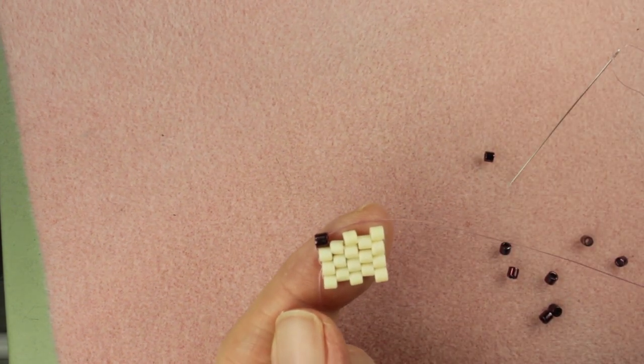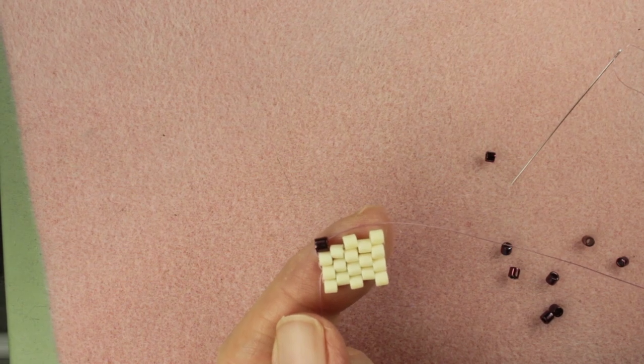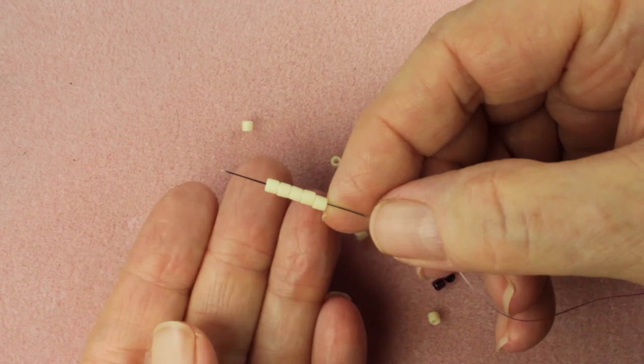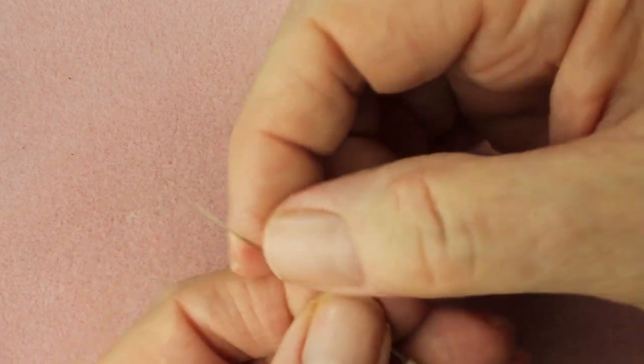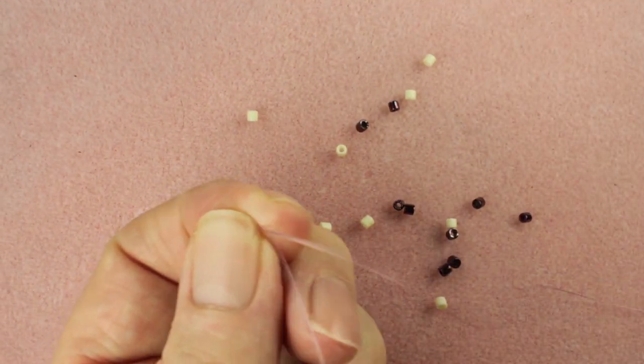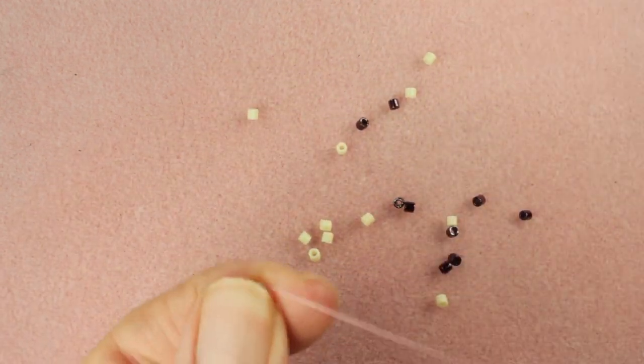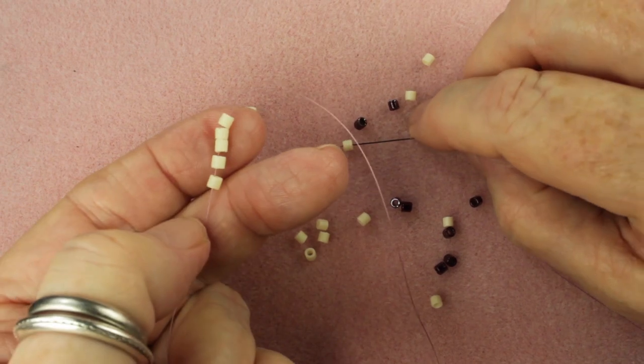If you hold on one second, I'll show you a quick and easy way to start. Okay, I'm gonna start. I've picked up five beads, which is an odd number, and that's what we would use to do our odd count. Pick up a bead.